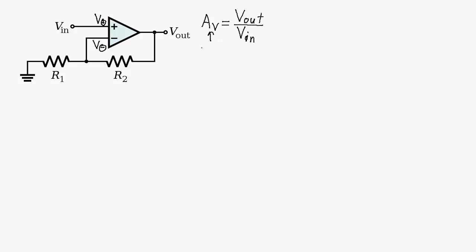In general, for any amplifier circuit the voltage gain is the output voltage divided by the input voltage, and in this case this will be the closed-loop gain. One of the characteristics of this op-amp that we're going to use — I'm going to designate it AVOL — is the open-loop voltage gain. This doesn't stand for volume; it stands for the open-loop voltage gain for this particular op-amp, and that differs from the closed-loop voltage gain of the circuit.